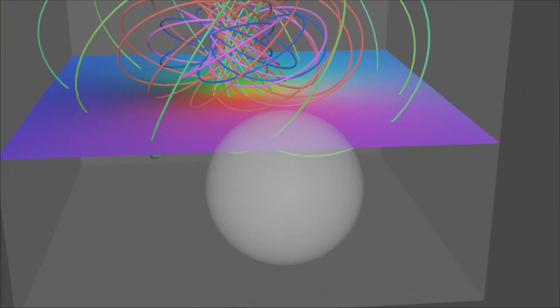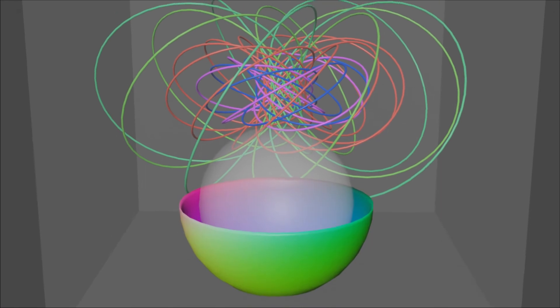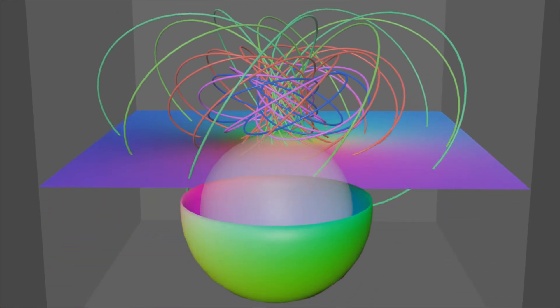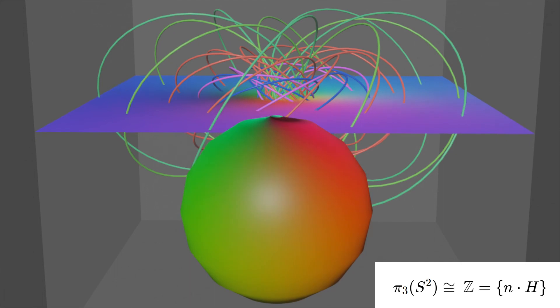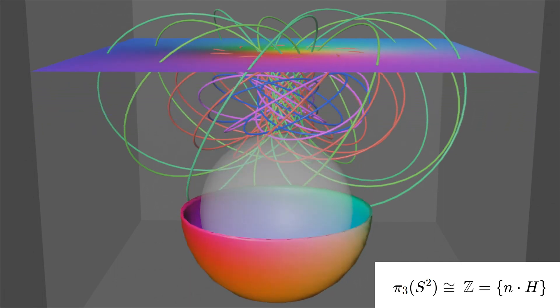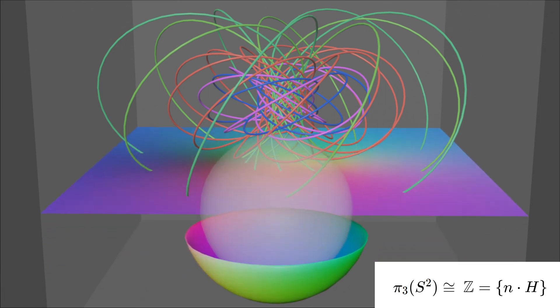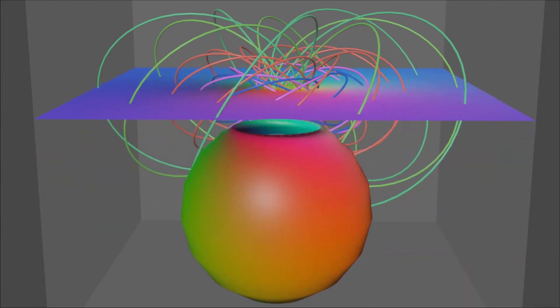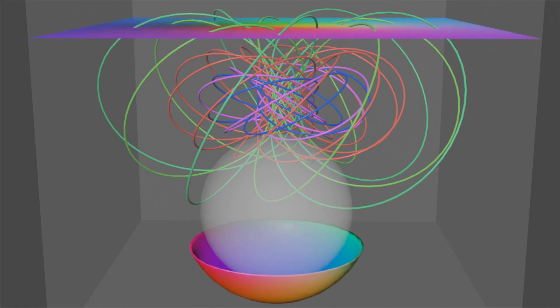Moreover, we can get the feeling that this H is a generator of the π₃ of S² by this rotating of the outer layer. Thanks for your watching.